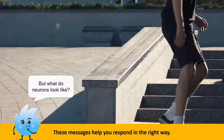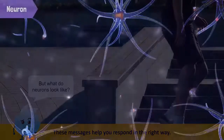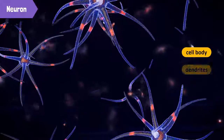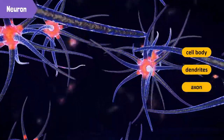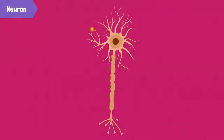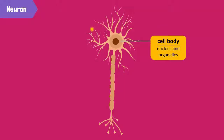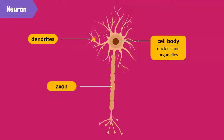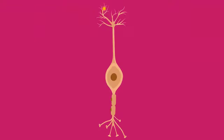But what do neurons look like? Neurons have three parts called the cell body, dendrites, and axons. The cell body contains the nucleus and many organelles. It has long branches projecting from it called dendrites. Dendrites pick up signals from their environment or other neurons. These signals travel from the dendrites to the axon, and then from the end of the axon, messages are sent in the form of chemicals to the next cell or neuron.